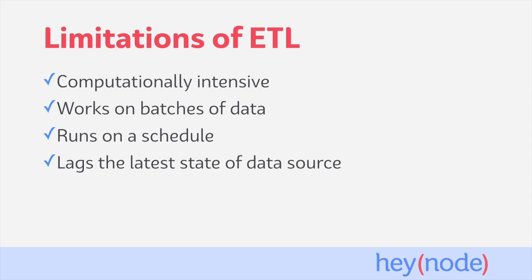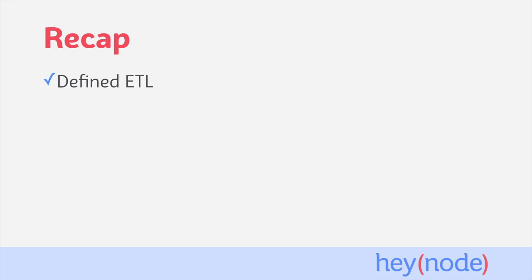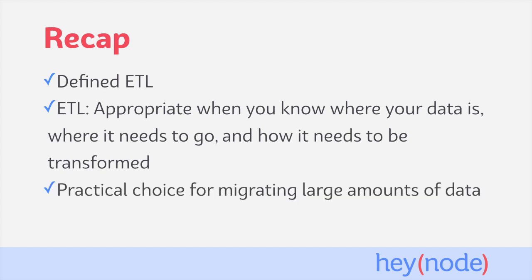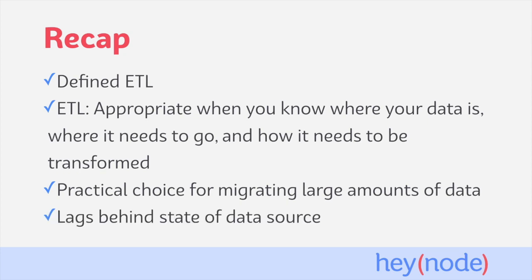Consider ETL processes best suited to solving problems where this delay isn't a concern. To recap, we defined ETL as a process to take data from one location, transform or process that data in some way, and then load the data into a final destination after it's been processed. We talked about the use cases for ETL and how it's most appropriate when you know where your data is, where it needs to go, and how it needs to be transformed. It's typically a practical choice when you're moving large amounts of data and need to standardize it along the way. And because an ETL process can be computationally intensive and typically works on batches on a predefined schedule, the output will almost always lag the source by some amount. So for applications where you need the output to be in sync with the source in close to real time, an ETL process might not be the right choice for you.